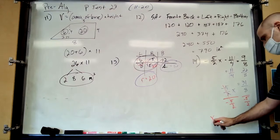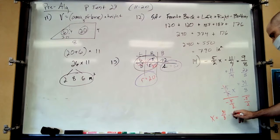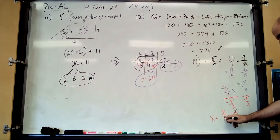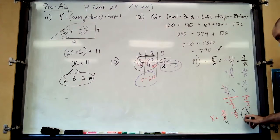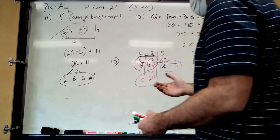Dividing 31/8 by negative 5/2: copy, dot, flip — so multiply by negative 2/5. Cross-cancel the 2 and the 8, and you're left with negative 31/20. That's an ugly answer, but that's the answer. Same two-step process — it's just more complicated when there are fractions.